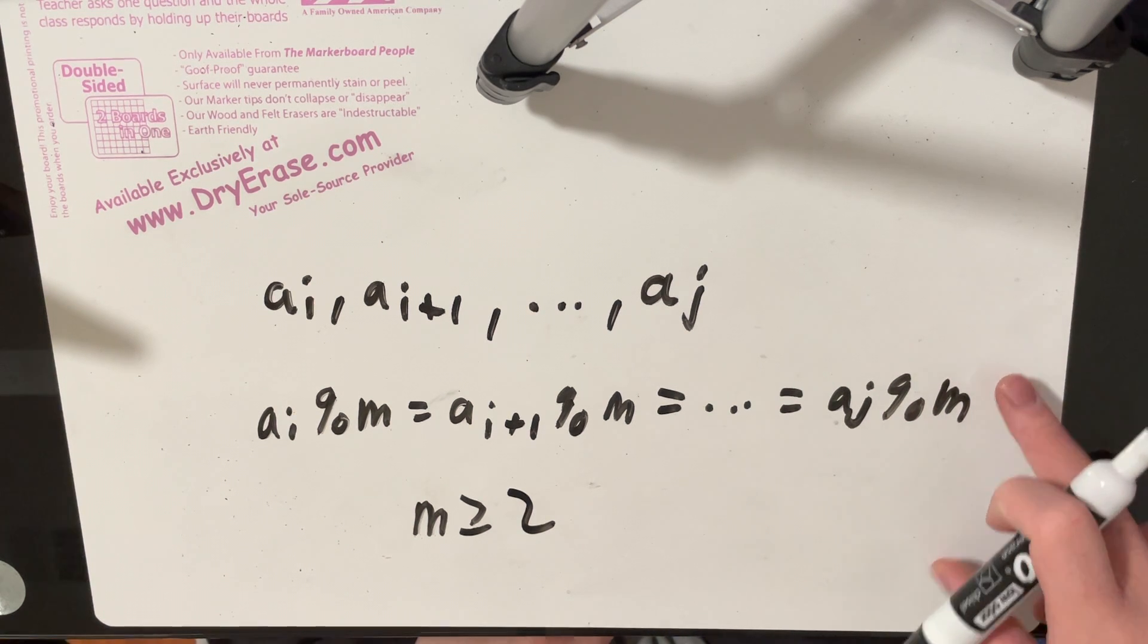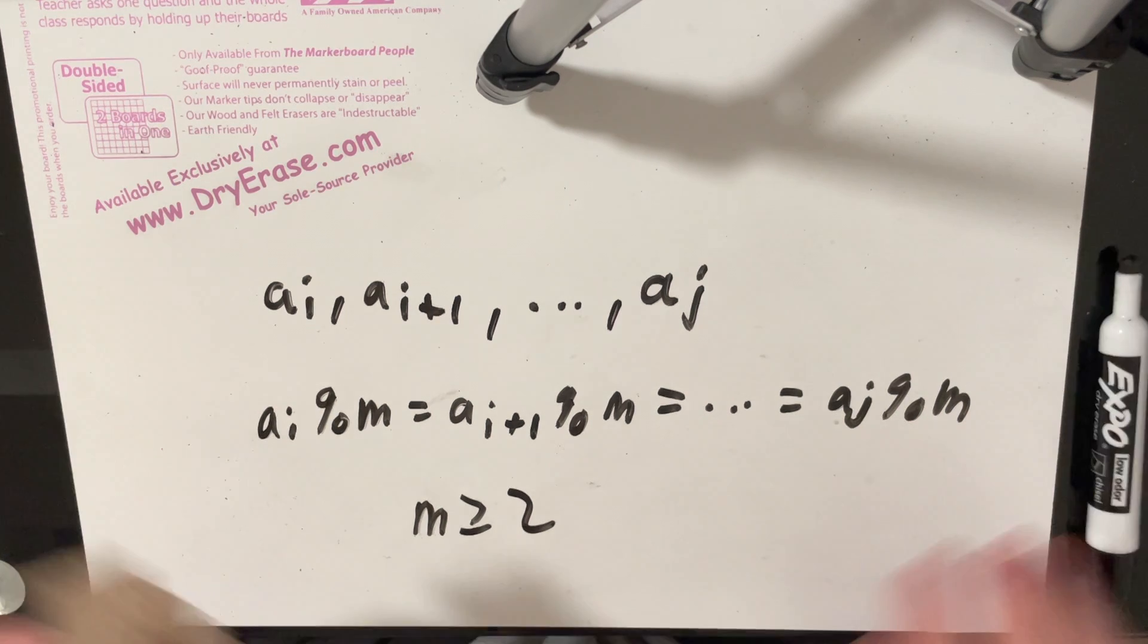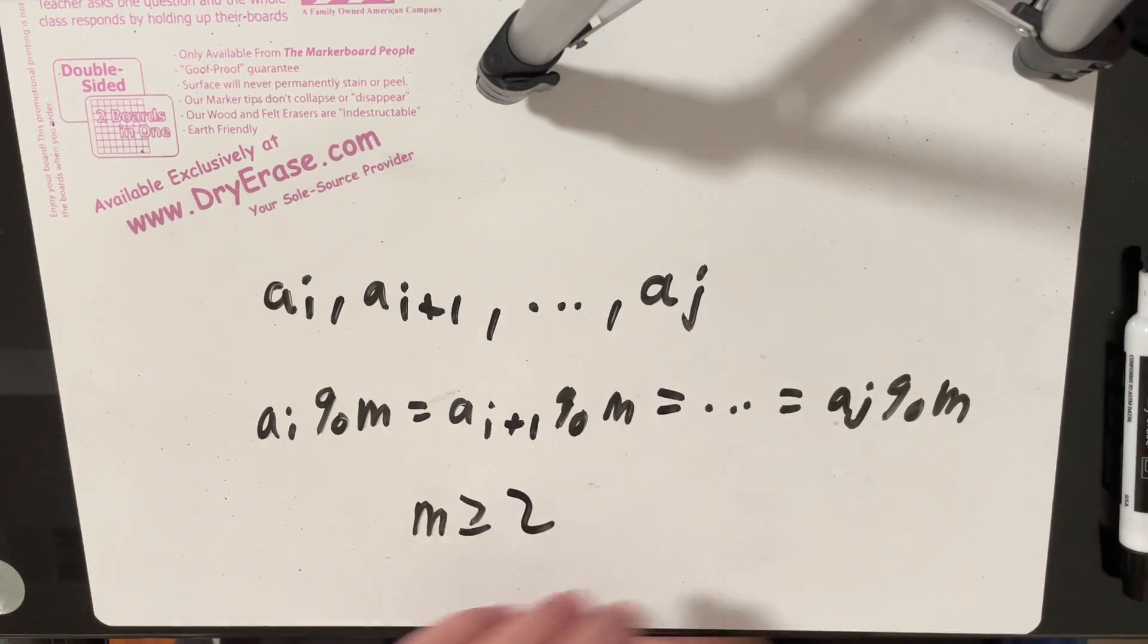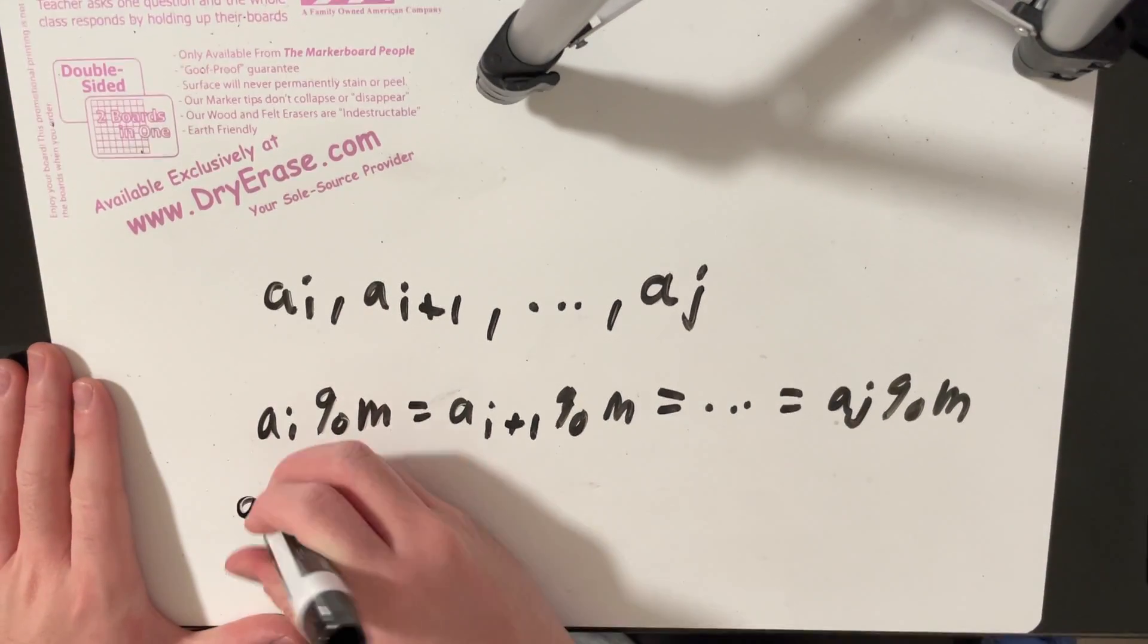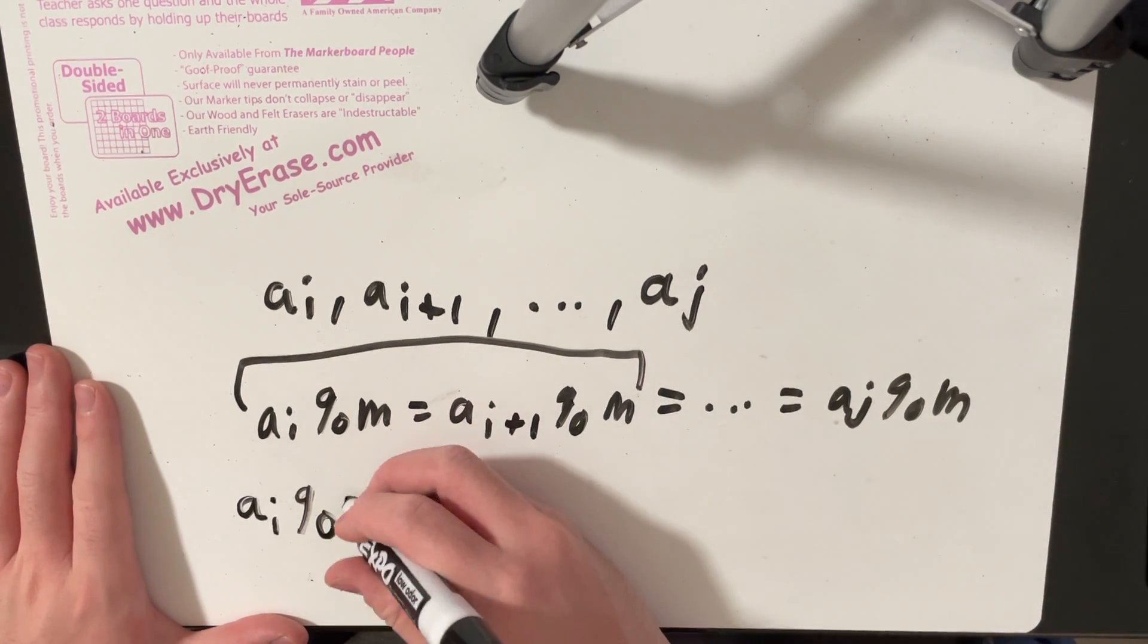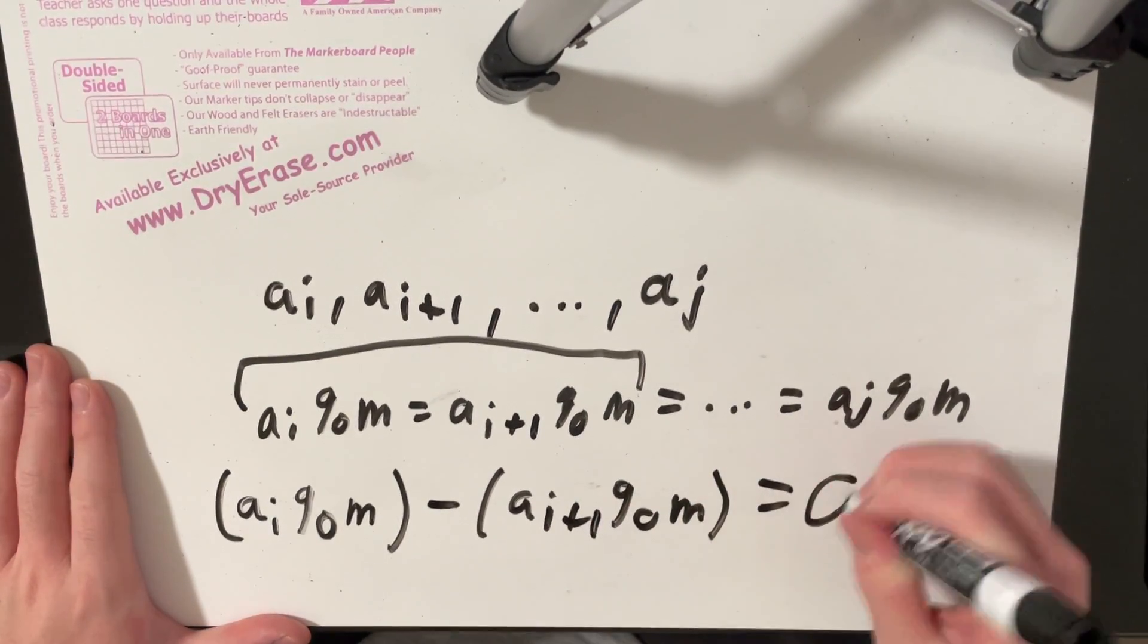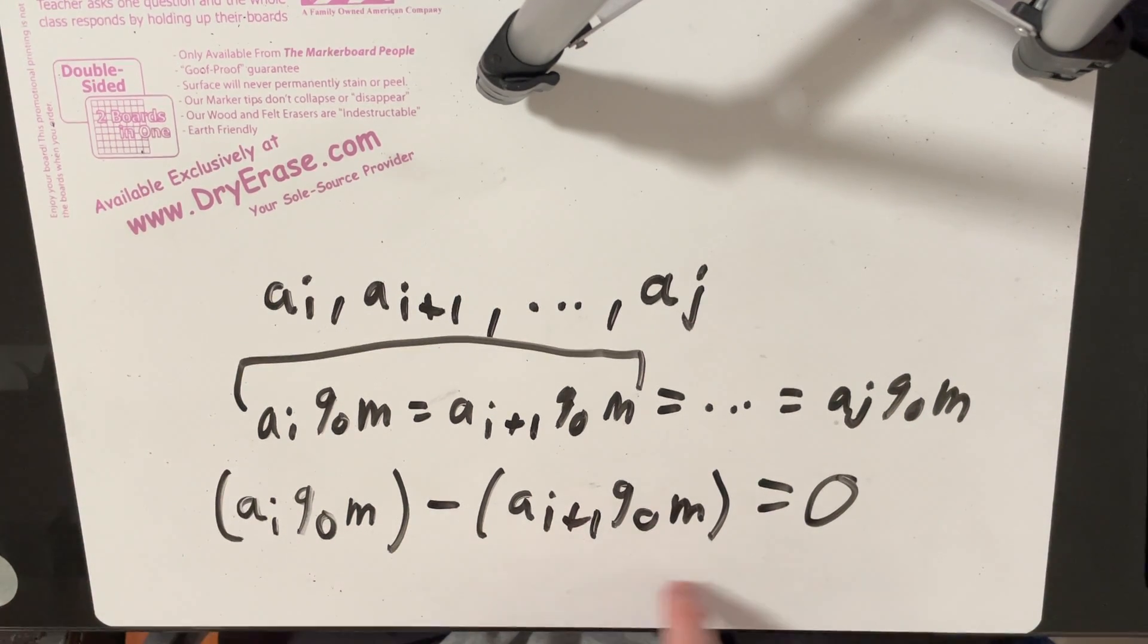However, an important property of numbers mod m is that if we want a number mod m to be equal to another number mod m, in other words if we want their remainders to be equal, then notice that we can look at any two adjacent numbers. I'm just gonna look at a_i and a_{i+1}. If we want a_i and a_{i+1} to be in the same friend group, then we know that this quantity minus this quantity must equal to zero.